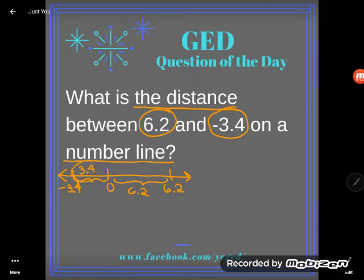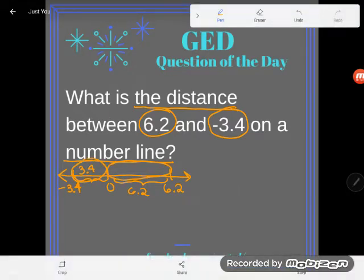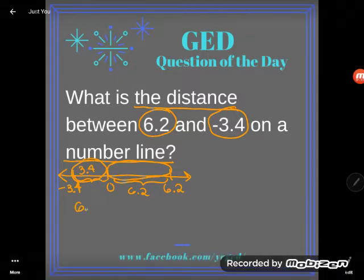Well, if this piece is 3.4 units long and this piece is 6.2 units long, and I have all that distance between these two numbers, I am actually going to have to add that up. 6.2 and 3.4.